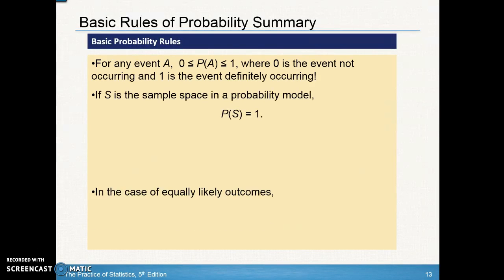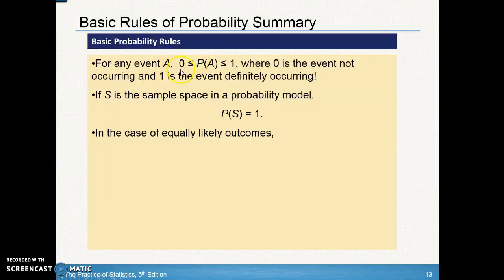Here's a quick summary of the probability rules. The probability of event A is between zero and one — zero means the event is not occurring, one means it is occurring. Think about weather: probability zero means no rain, probability one means it's definitely raining. If S is the sample space, the probability of the whole sample space always equals one — add up all probabilities and they give you one, meaning you've included 100% of the sample space.